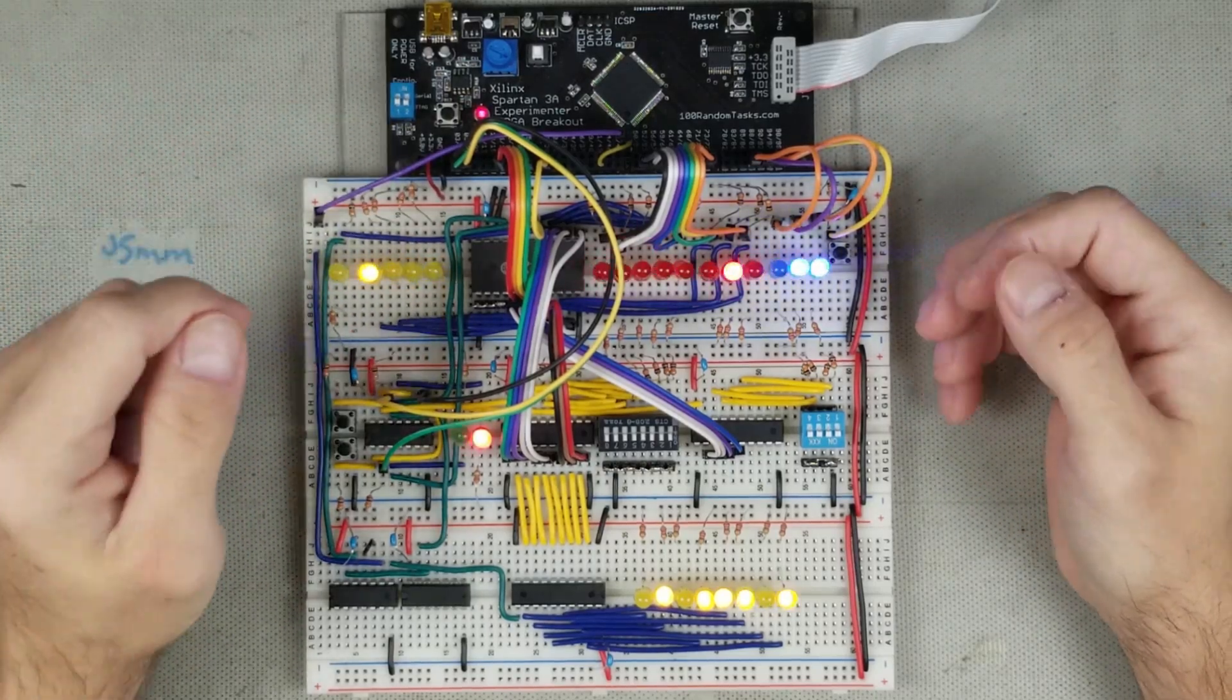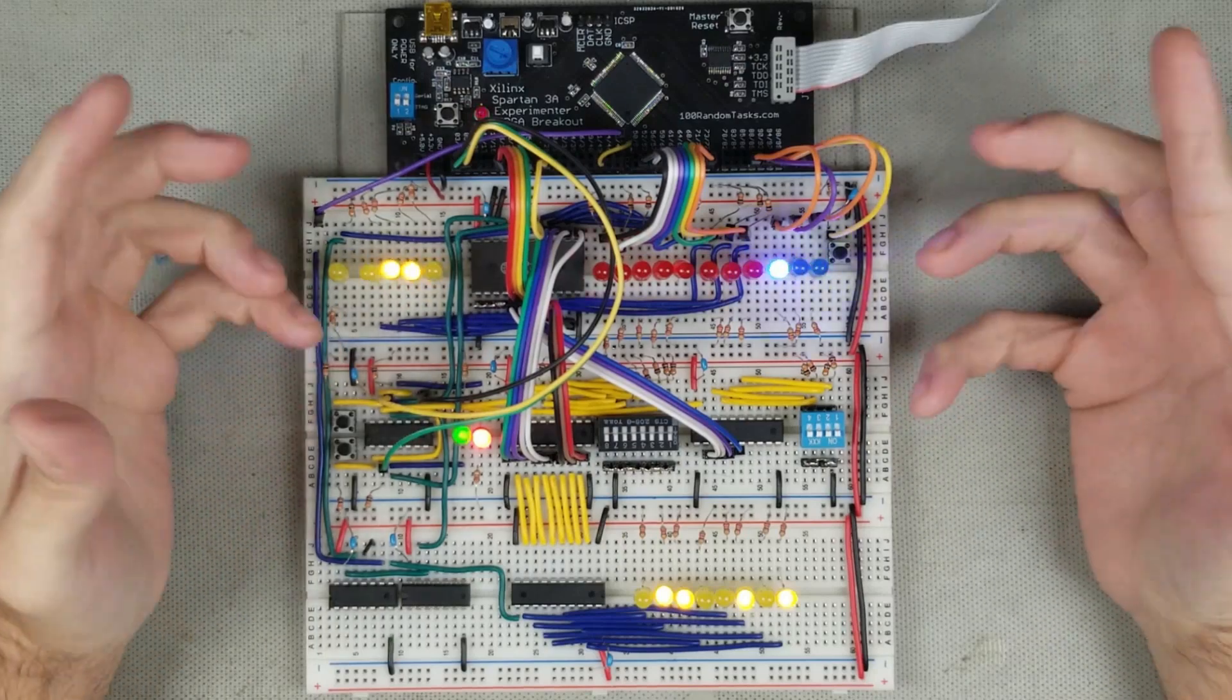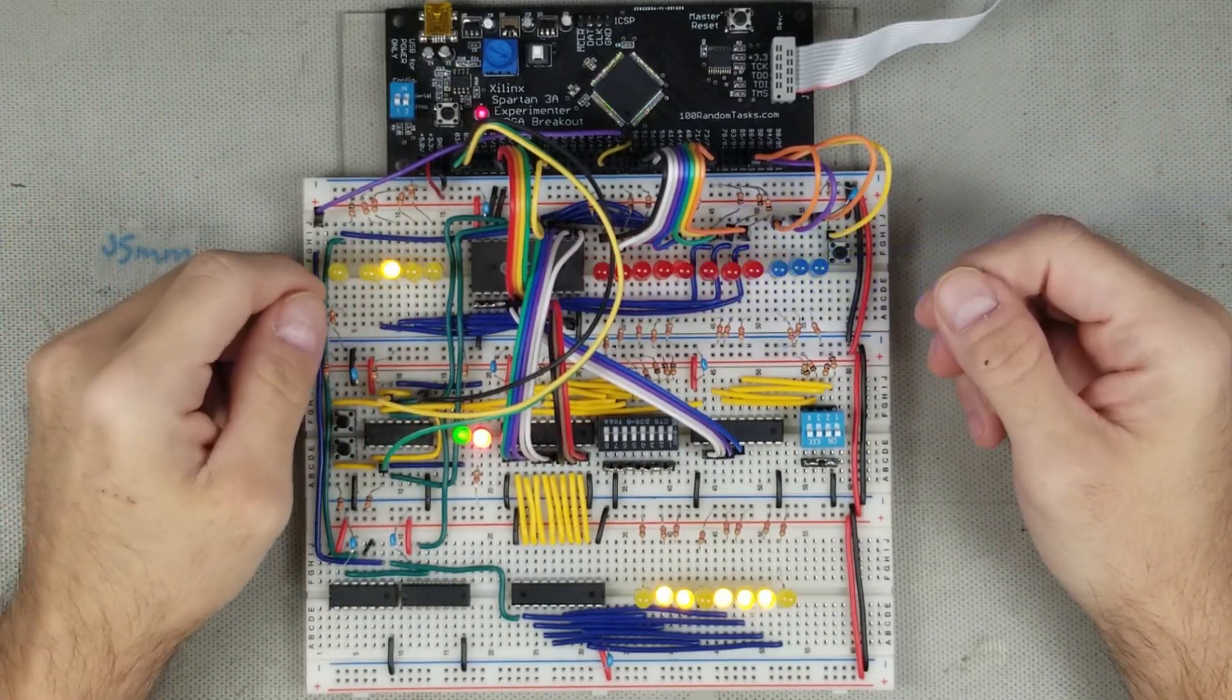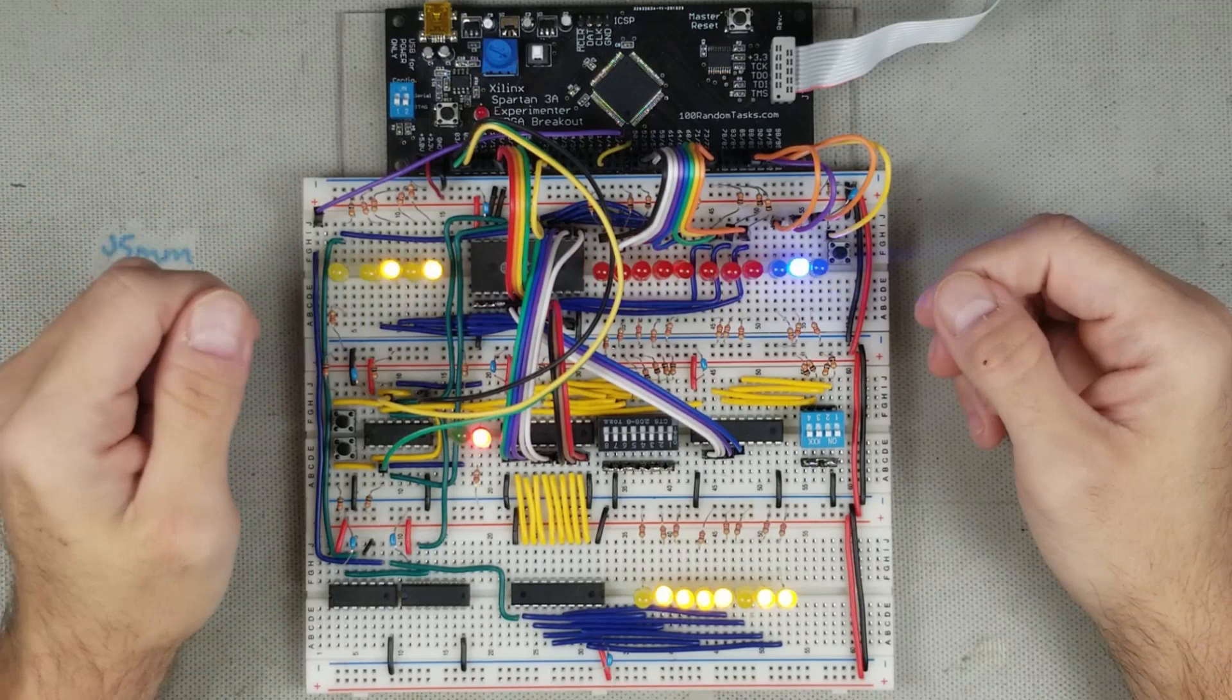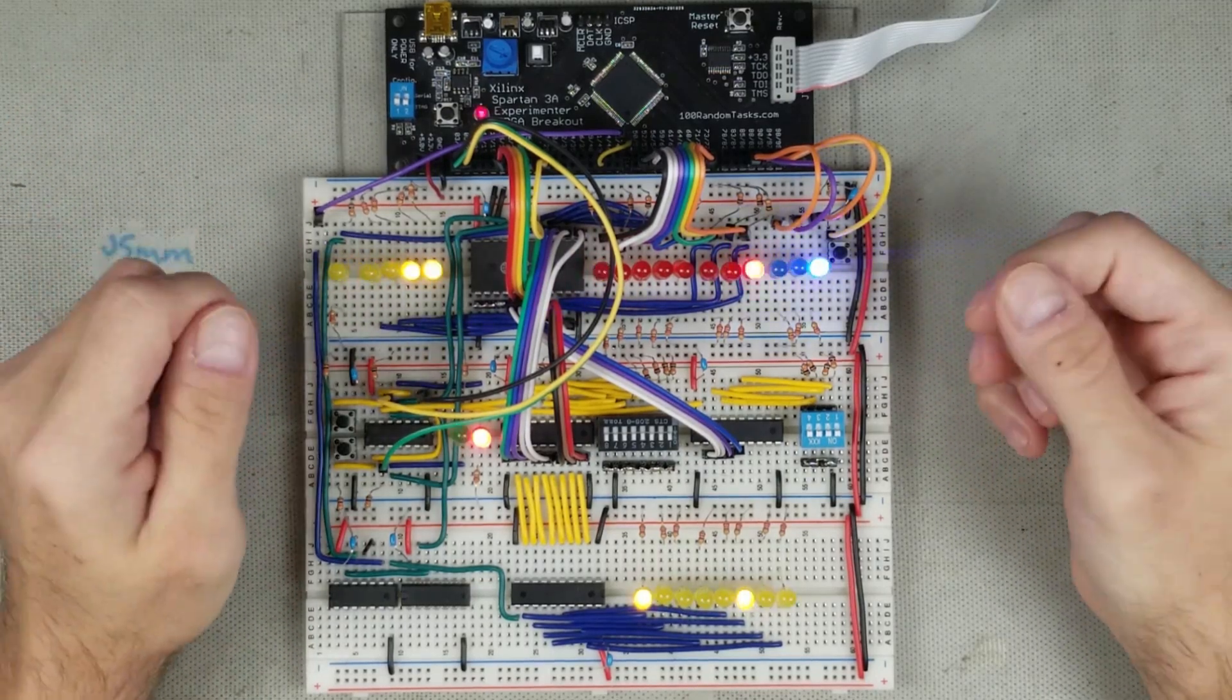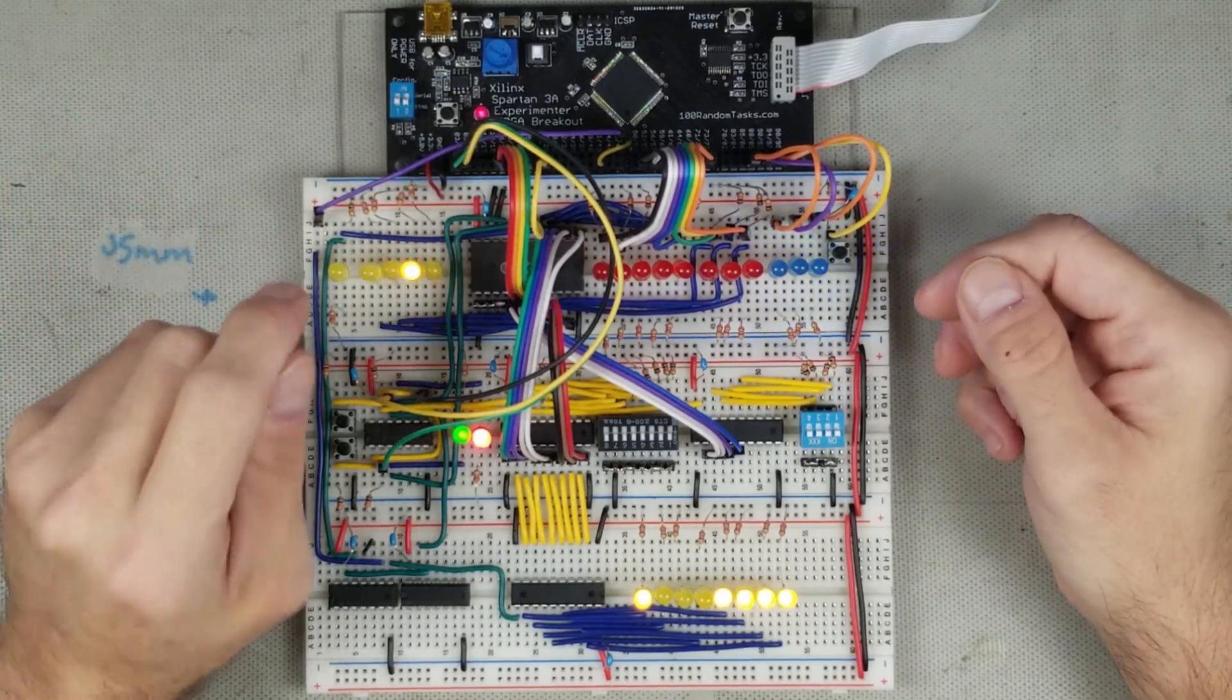Last time, we finally created a functional CPU. Albeit limited with only 256 bytes of RAM, it was capable of loading and executing instructions and manipulating data. Today we are going to upgrade the CPU and give it a 16-bit address bus for 64k of available RAM, as well as improve the cycle time of the instructions for faster program execution and test it on the same setup as in the last video. So stay tuned as we make our simple CPU more useful.